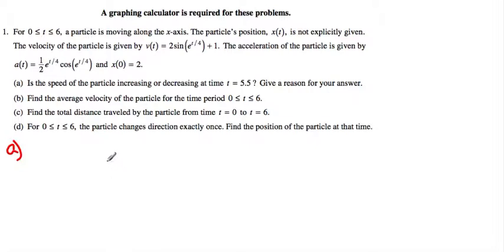First, part A. Now, speed of the particle is increasing or decreasing. Speed of the particle will increase if the velocity and acceleration have the same sign. But when they have different sign, yes, the speed will decrease.